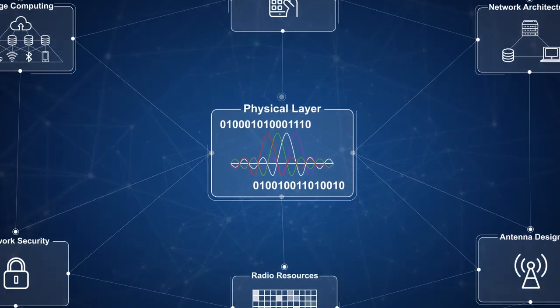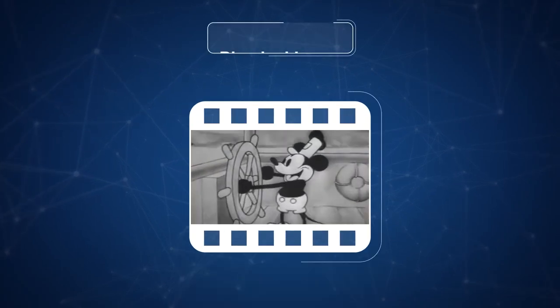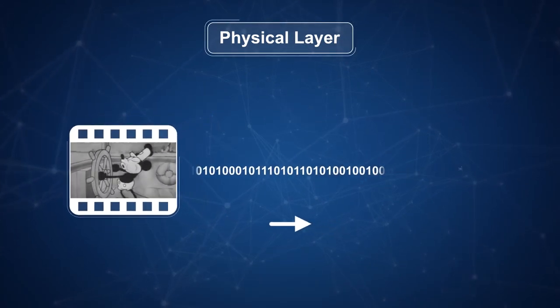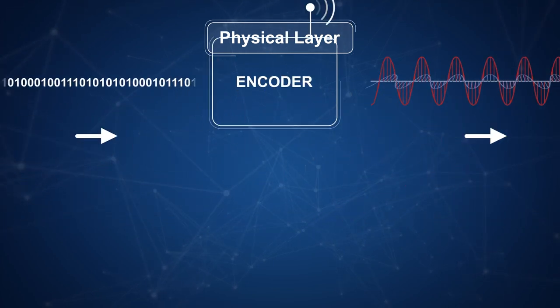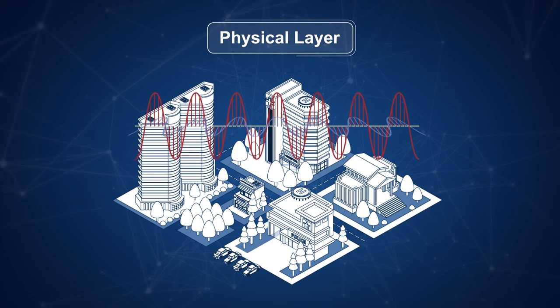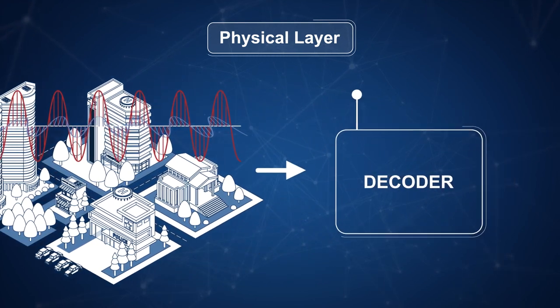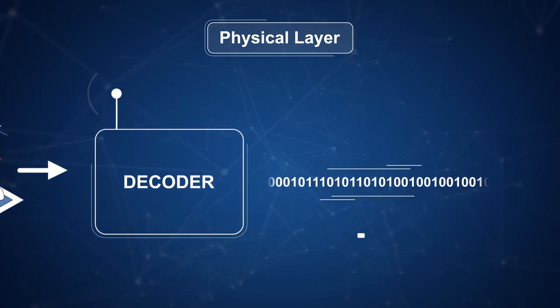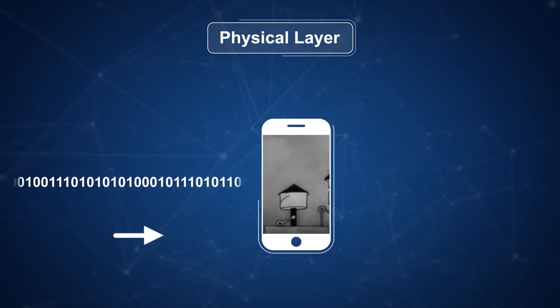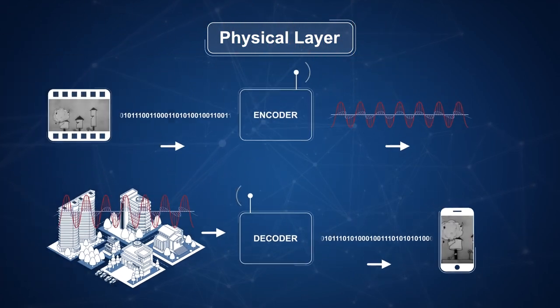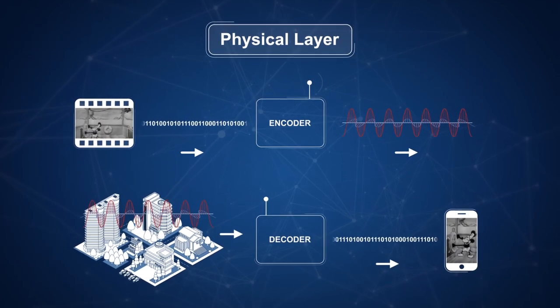Once a stream of data is converted into bits, the physical layer processes it into electromagnetic signals which travel through the air and are steered towards the receiver, where the original data is accurately reconstructed. This process involves numerous steps which have been refined over decades with sophisticated mathematics and engineering.